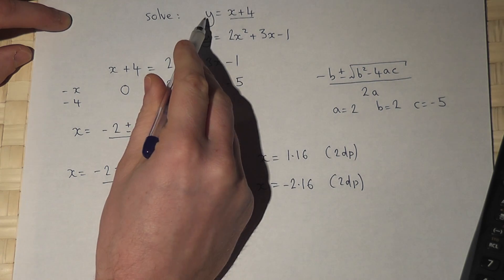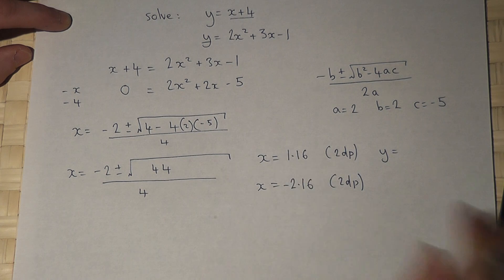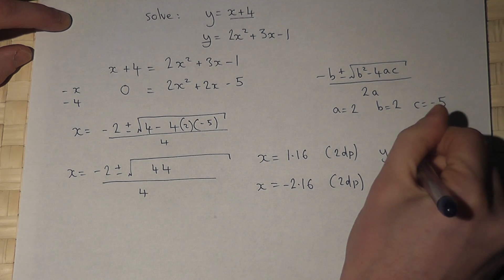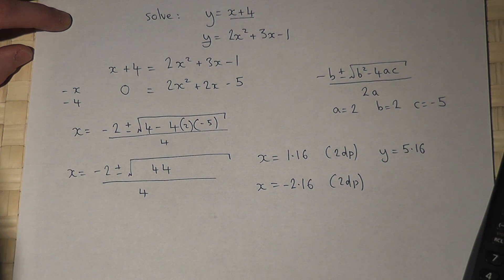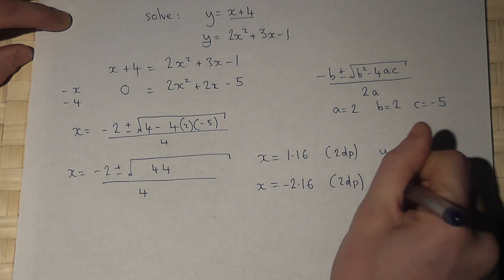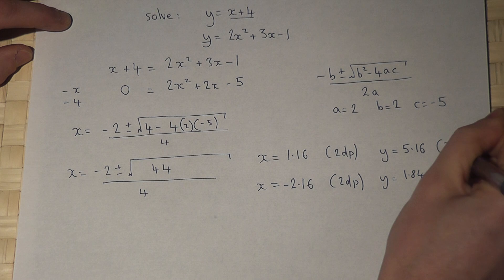And then, to find y, I will then just add 4 to these values. So, 1.16 plus 4 is 5.16, or minus 2.16 plus 4, gives me the answer of 1.84. Again, to 2 decimal places.